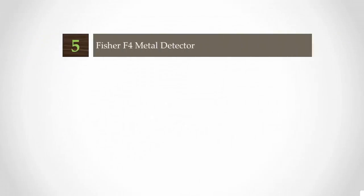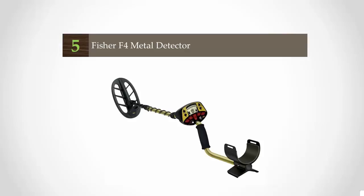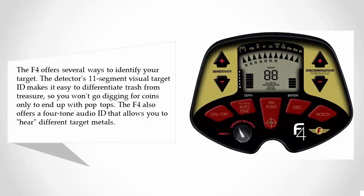Starting off our list at number five, the F4 offers several ways to identify your target. The detector's 11-segment visual target ID makes it easy to differentiate trash from treasure, so you won't go digging for coins only to end up with pop tops.